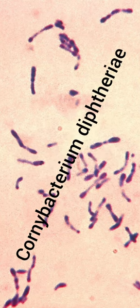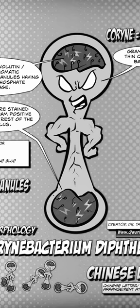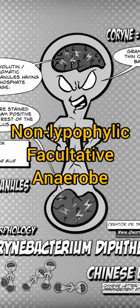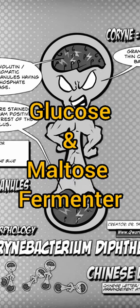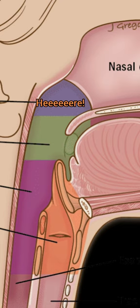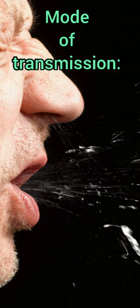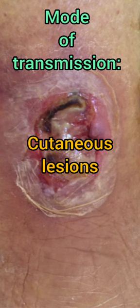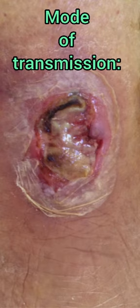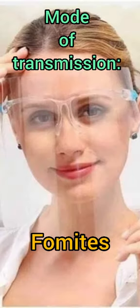The causative agent is Corynebacterium diphtheriae. It is a non-lipophilic facultative anaerobic, grows best under aerobic conditions, and is a glucose fermenter. It only inhabits the human nasopharynx in a carrier state, and the mode of transmission is through droplets from coughing and sneezing, and rarely cutaneous lesions which involve hand-to-mouth transmission and sometimes fomites.